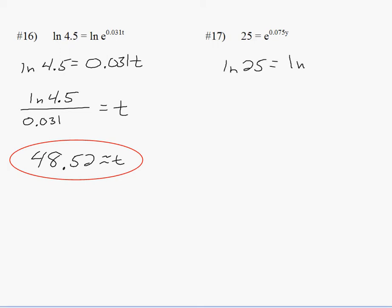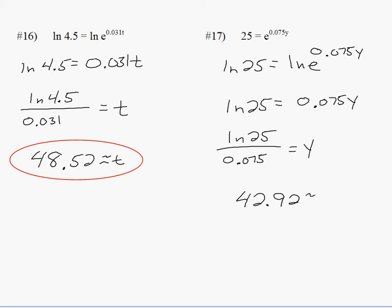Number 17, if you apply natural log to both sides, the right side becomes what was the exponent. Divide both sides by the coefficient of y. Put it into your calculator. You get 42.92 for y.